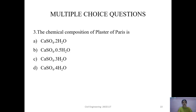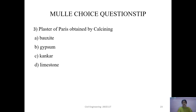Question 3: The chemical composition of Plaster of Paris is — A) CaSO4·2H2O, B) CaSO4·0.5H2O, C) CaSO4·3H2O, or D) CaSO4·4H2O. The answer is B: CaSO4·0.5H2O, calcium sulphate hemihydrate. Question 4: Plaster of Paris is obtained by calcining — A) bauxite, B) gypsum, C) kankar, or D) limestone. Plaster of Paris is obtained by calcining gypsum. Therefore, the answer is B: gypsum.